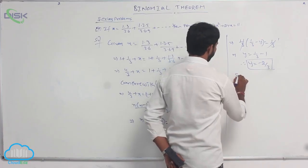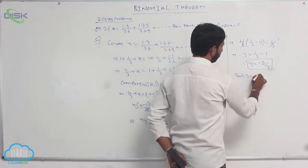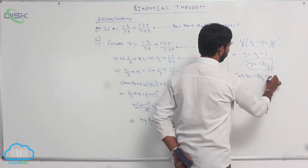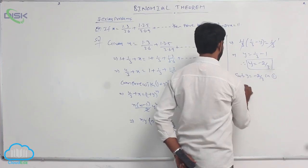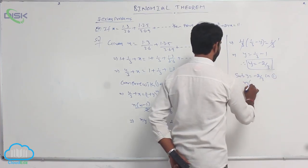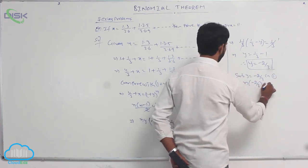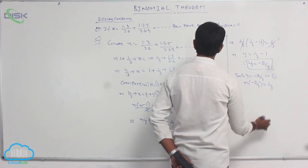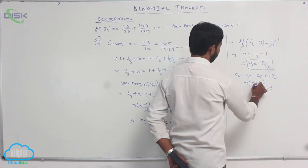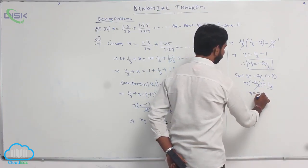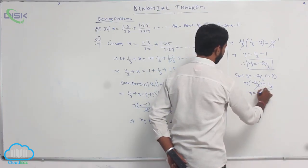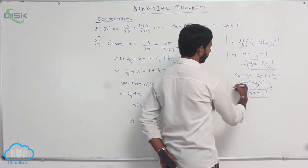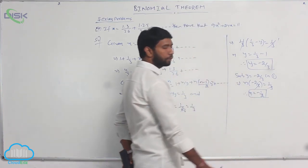Substituting y = −2/3 in condition number 1: n × (−2/3) = 1/3. Here 1/3 gets cancelled, so n = −1/2.